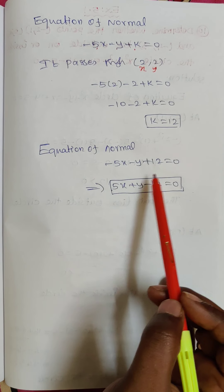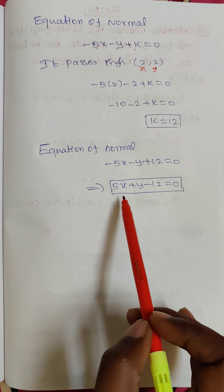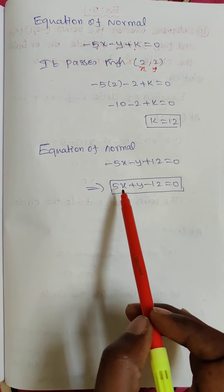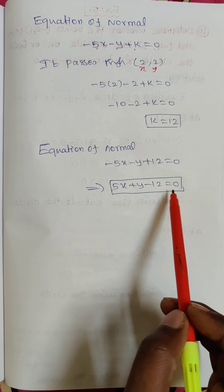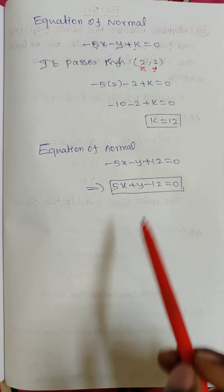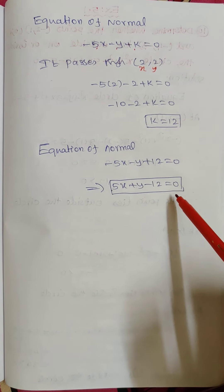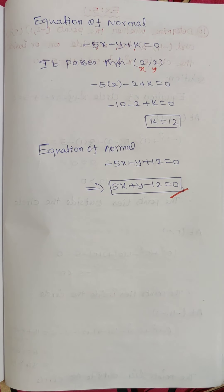Substituting k, the equation of normal is minus 5x minus y plus 12 equal to 0. Multiplying by minus 1, we get 5x plus y minus 12 equal to 0. That is the equation of normal. Clear? Okay children, thank you.